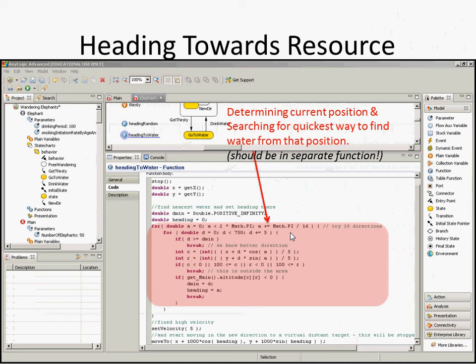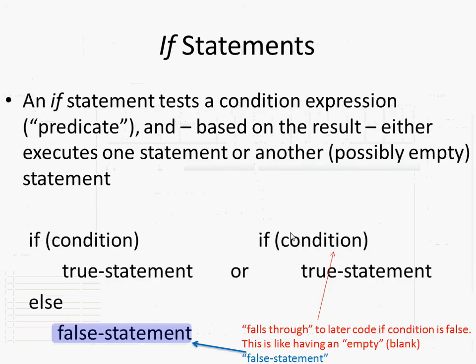The if statement is one of the most critical. It occurs in two variants: if with no else, or if with an else. The statement tests a condition — an expression computing a boolean true or false. If true, we execute the consequence; if false, we execute the alternative if specified. If no alternative is specified and the condition is false, the statement simply falls through.